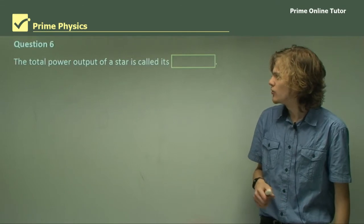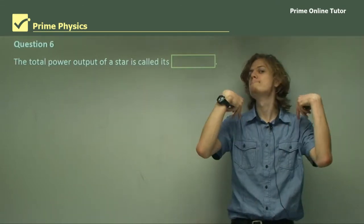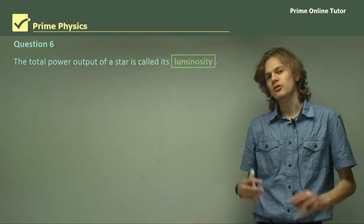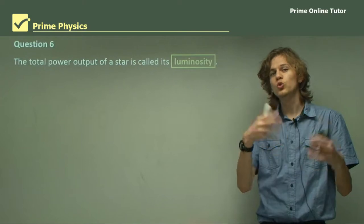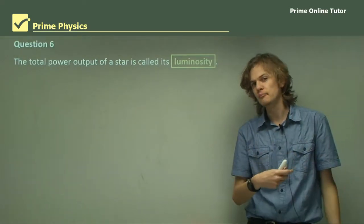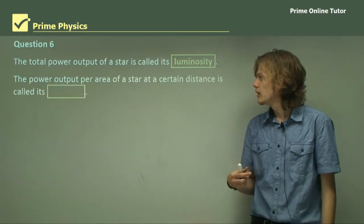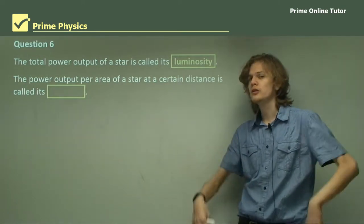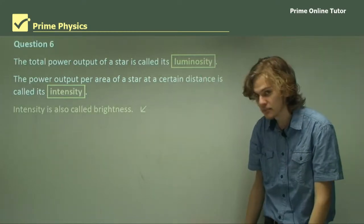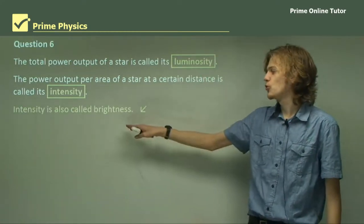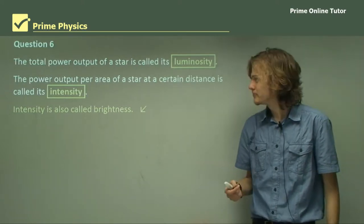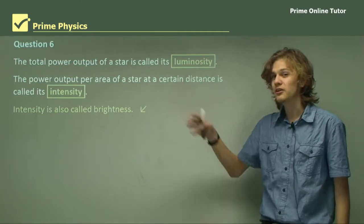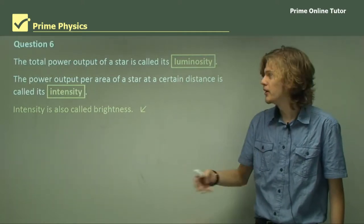Question 6. The total power output of a star is called its luminosity. It's measured in watts or joules per second, the total amount of energy per unit time. The power output per area at a certain distance is called its intensity. Intensity is also called brightness, so that's also a correct answer. It's very important not to get these confused, because luminosity doesn't change depending on where you look from, but intensity does.